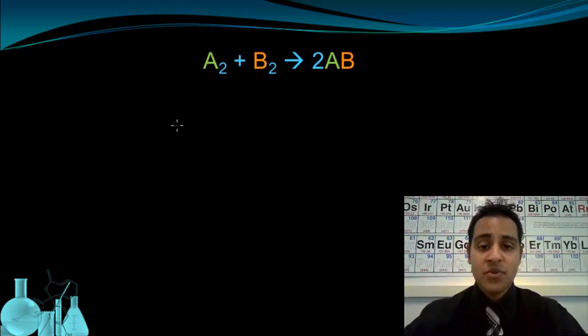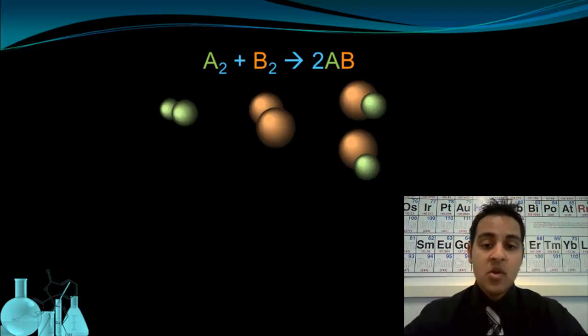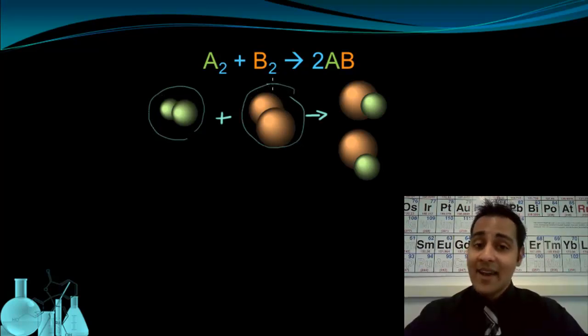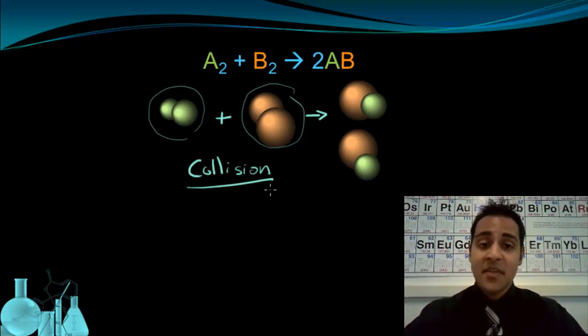Let's look at the reaction between substances A and B to form two particles of AB. If we draw what the particles look like for this equation, we can clearly see that when a particle of A combines with a particle of B, we get two particles of AB. So this shows us that the atoms are being rearranged. But something had to happen between the molecule of A and the molecule of B so that their atoms were able to rearrange. Something had to happen there, and that something is a collision.